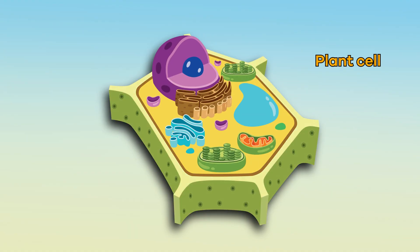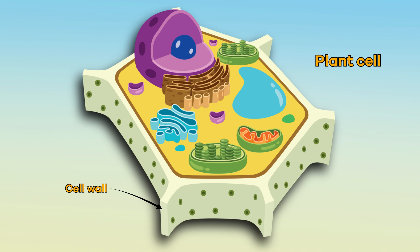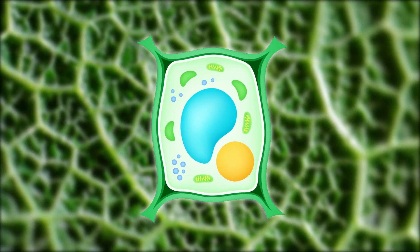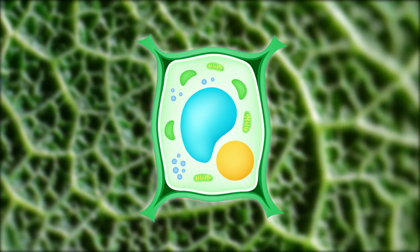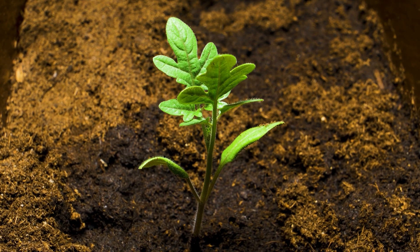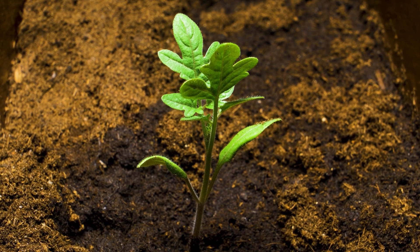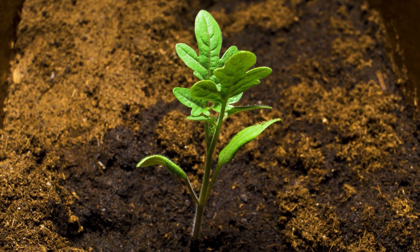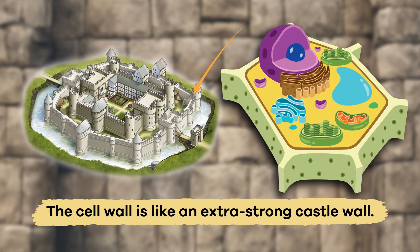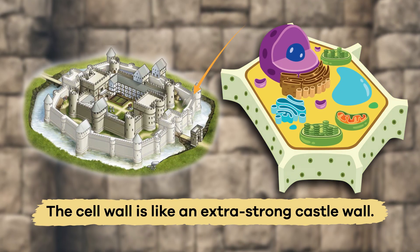Plant cells have a rigid cell wall, located just outside the plasma membrane. This causes them to look rectangular in shape. The cell wall helps plants stand upright, without bones. It is like an extra-strong castle wall.